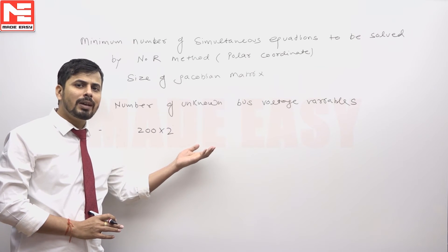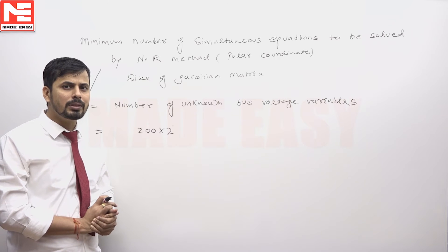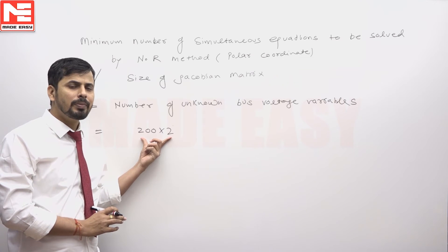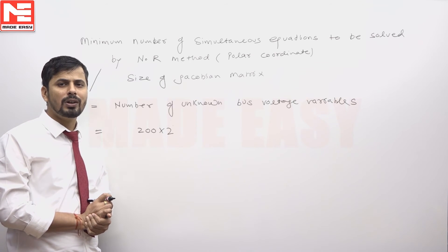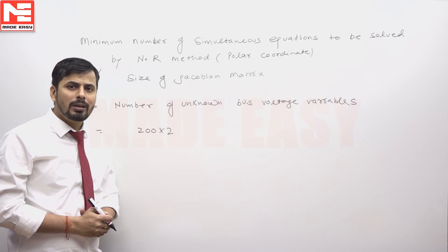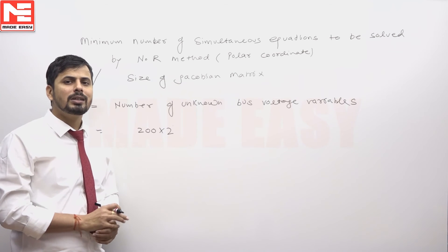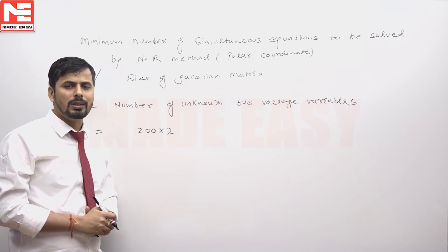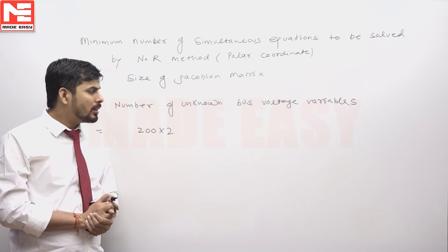If we subtract the total number of known bus voltage variables from this total, we can calculate the total number of unknown bus voltage variables. Out of 200 buses, 160 are PQ buses and the remaining 40 buses have generators connected to them — it is understood that these 40 buses are generator buses.